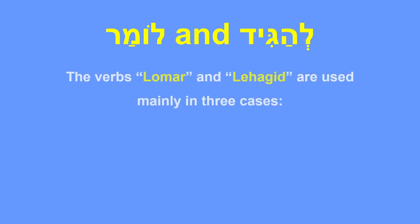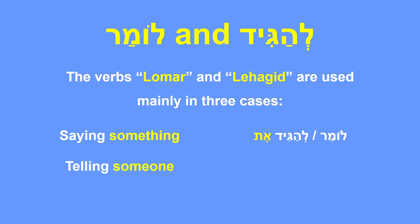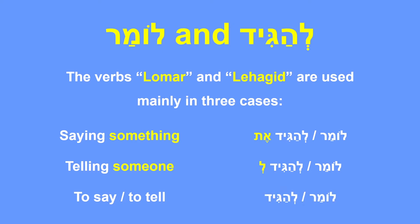In today's lesson, in this part, we're going to cover the verb Lomar. The verbs Lomar and Leagid are used mainly in three cases: when we are saying something, and if that something is definite, then we will use the preposition Et; when we are telling someone, the preposition that we will use is Le — Lomar, Leagid, Le; and simply when we want to use the verbs to say or to tell, the equivalent in Hebrew will be the verbs Lomar and Leagid, because it is something that we said or told.